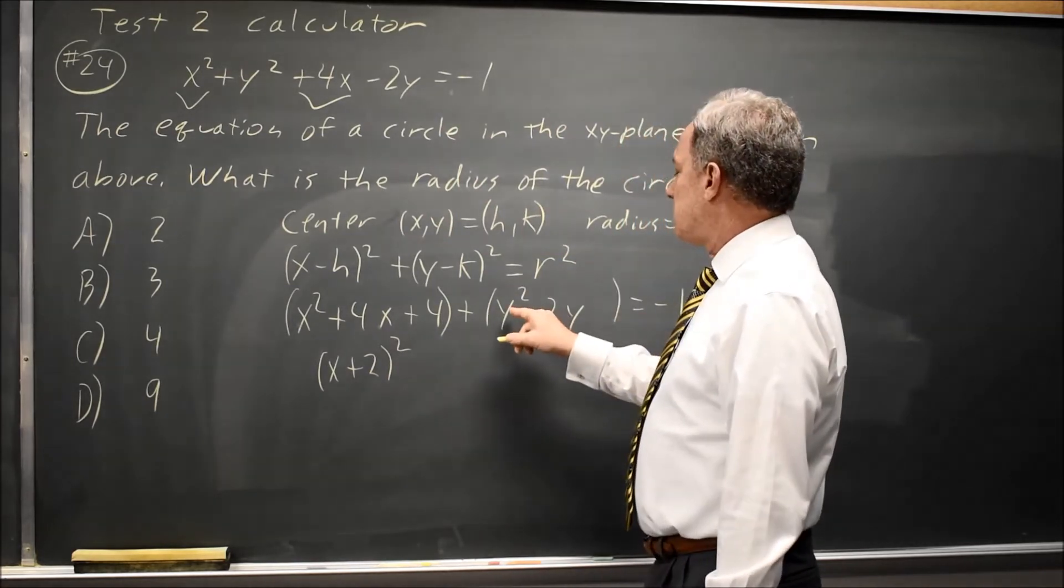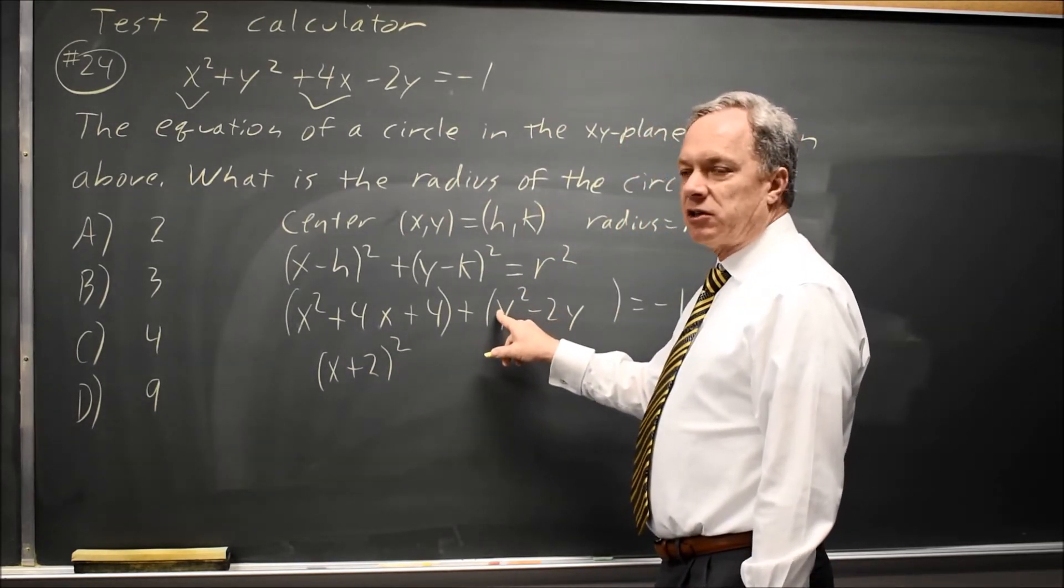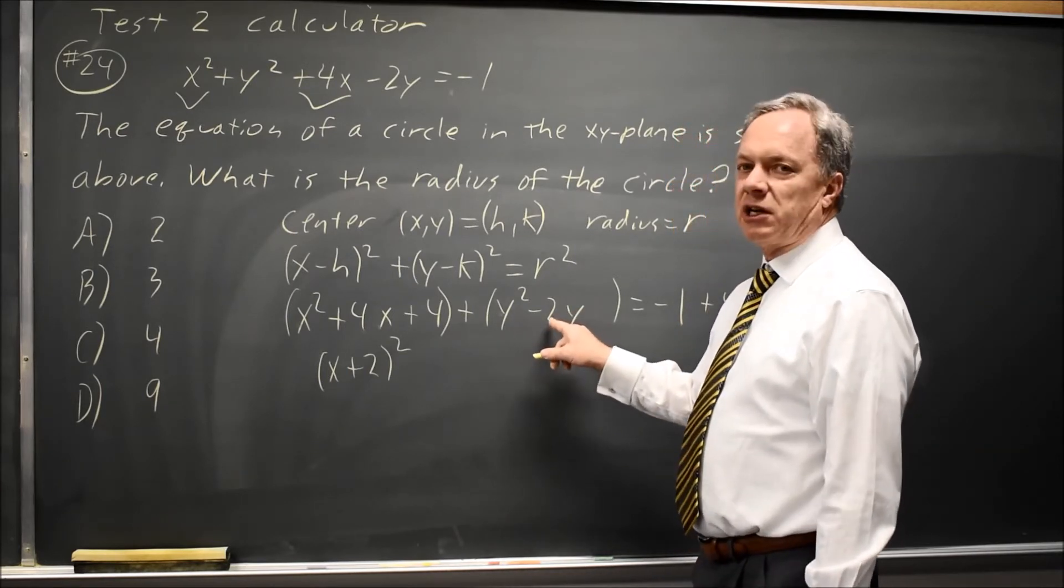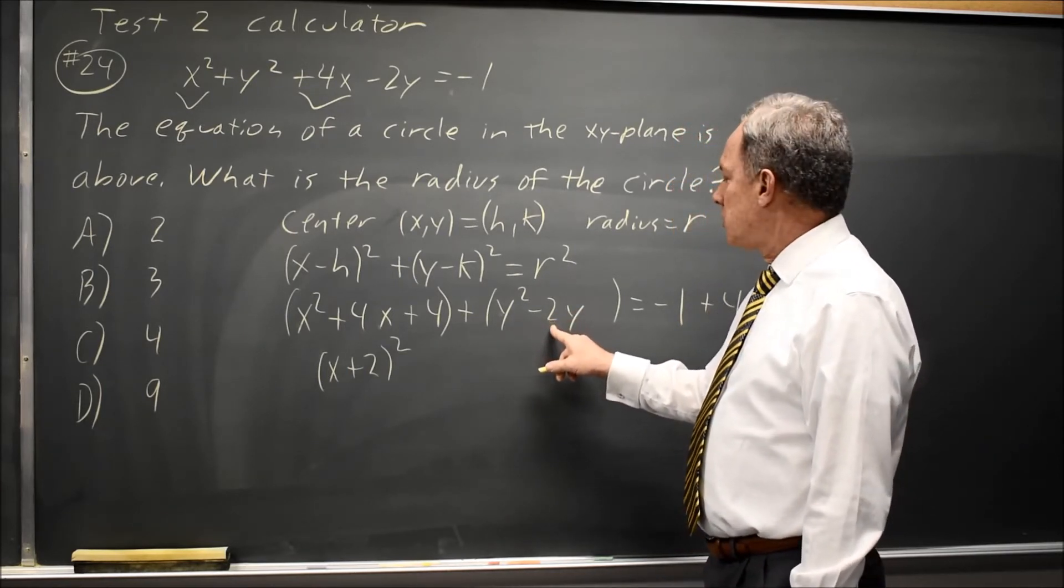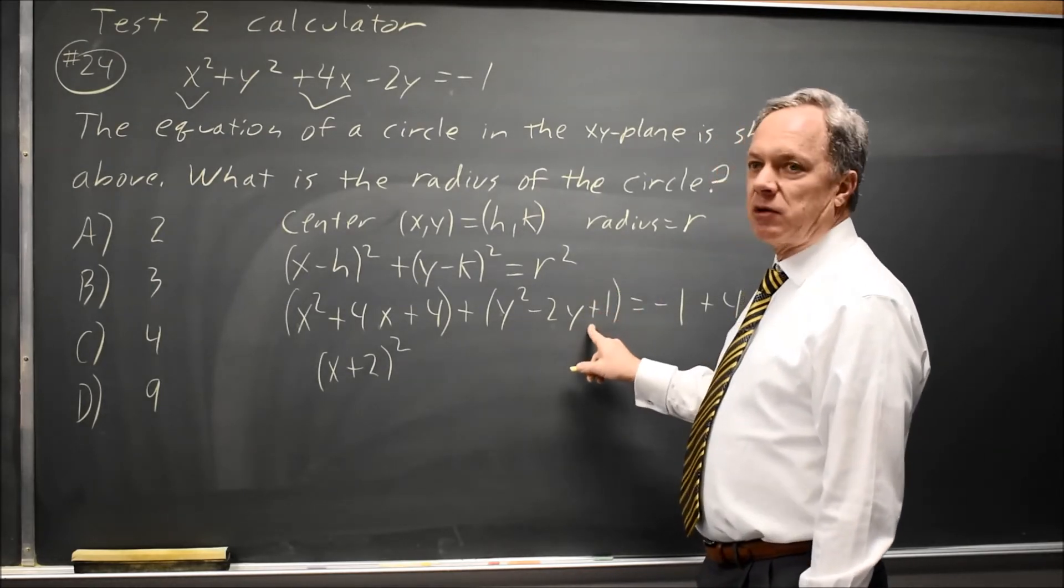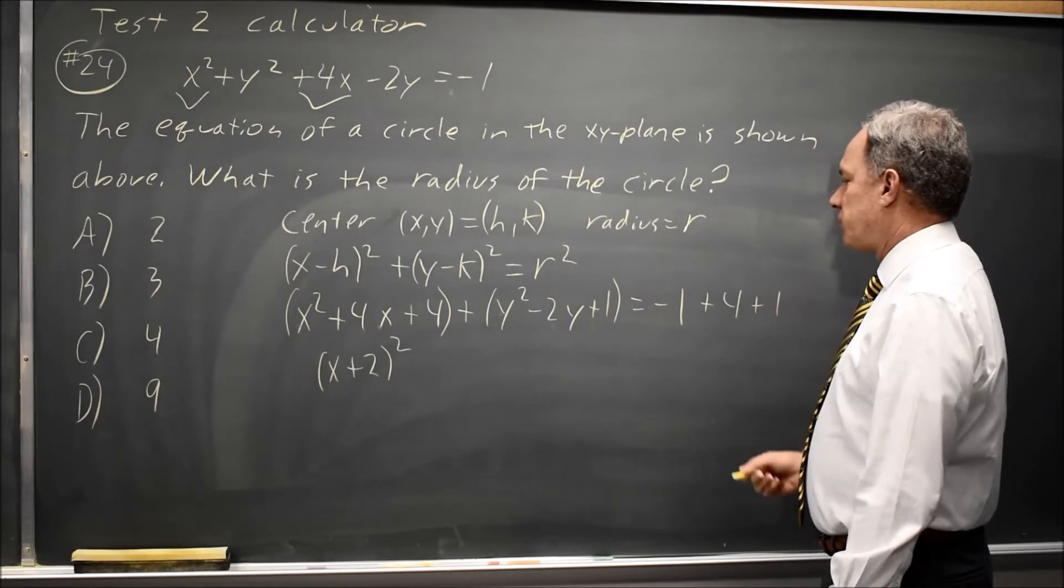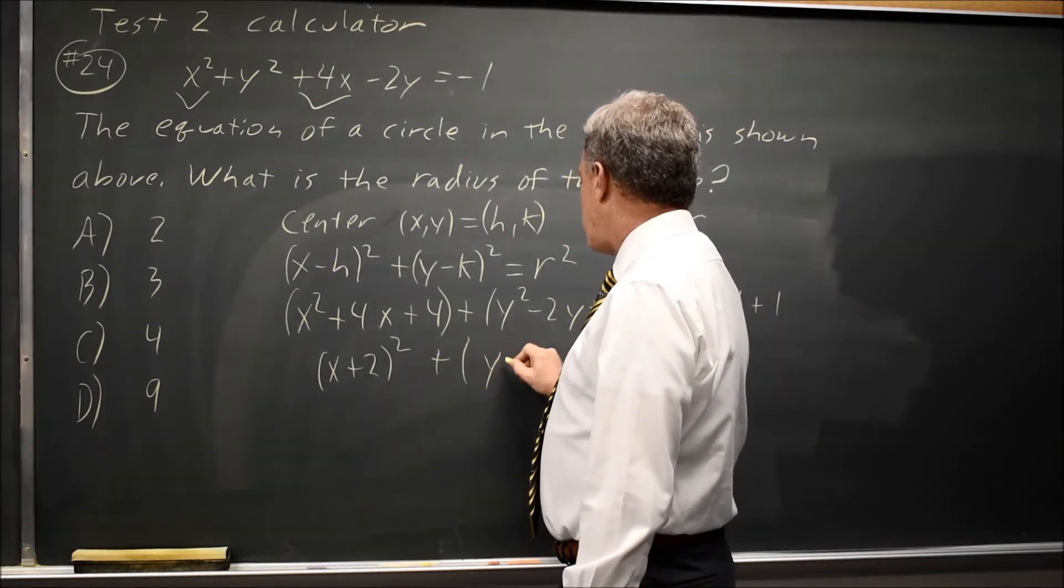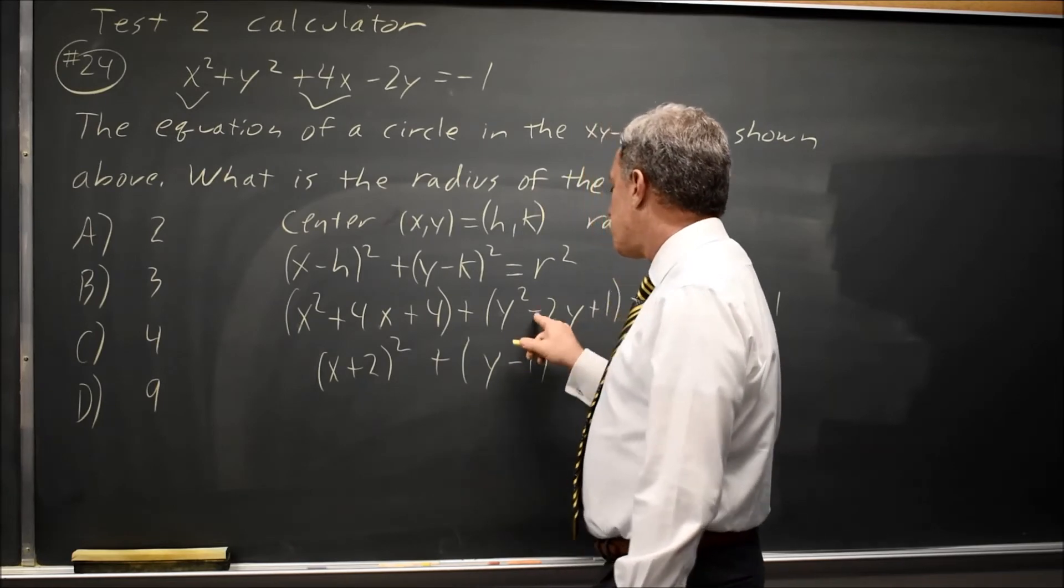For the y's, since the y squared leading coefficient is 1, I take half of the y coefficient. Half of negative 2 is negative 1, negative 1 squared is positive 1. I just added 1 on the left, so I have to add 1 on the right. Since I completed the square, this is y minus 1 quantity squared. I can check that with FOIL.